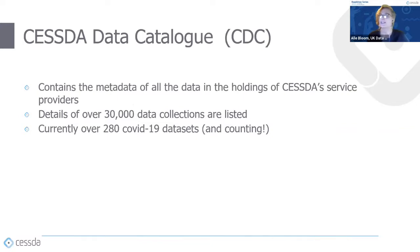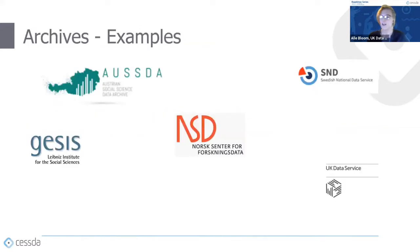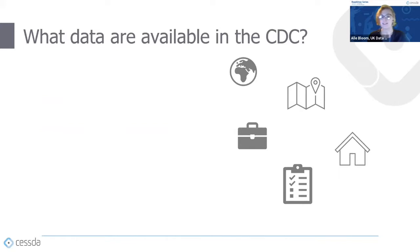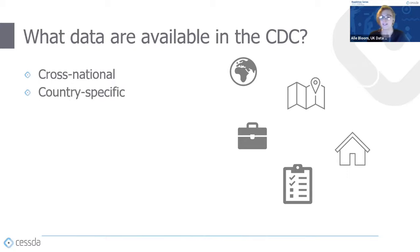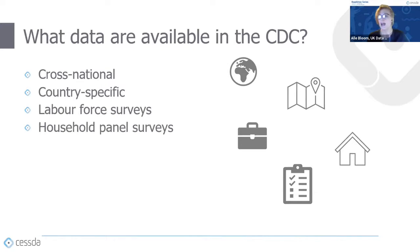The CESDA data catalog contains metadata for over 30,000 collections held by CESDA members, and many member archives can be searched from this one place. It currently has over 280 COVID-19 datasets and counting. Searchable archives include GASIS, FORS, NSD, and many others. The catalog holds many kinds of data, including cross-national data like the European Working Conditions Survey, country-specific data such as Swedish national elections or the British Social Attitudes Survey, labour force surveys, household panel surveys like Understanding Society, and general social surveys.